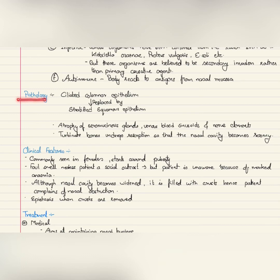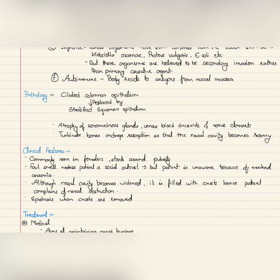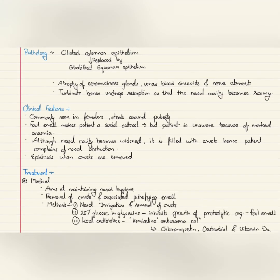Coming on to the pathology of atrophic rhinitis: the ciliated columnar epithelium, which normally lines the nasal cavity, is replaced by stratified squamous epithelium. There is atrophy of the seromucous glands, venous blood sinusoids, and nerve elements. The turbinate bones undergo resorption so that the nasal cavity becomes roomy.